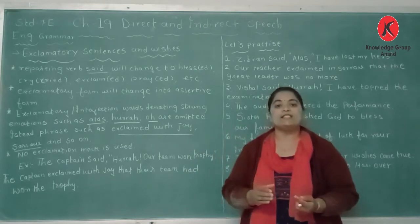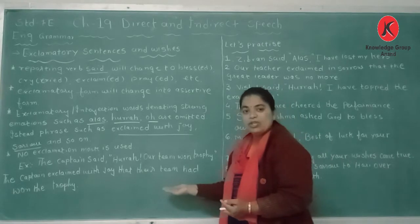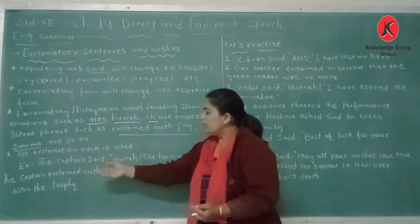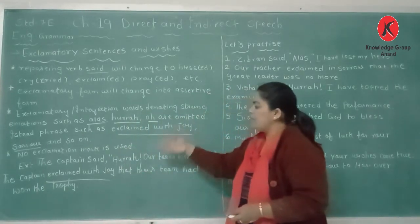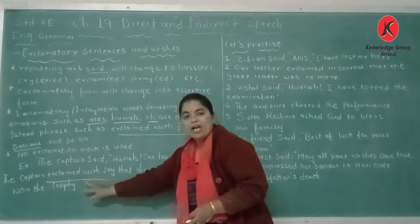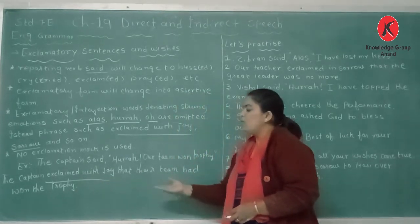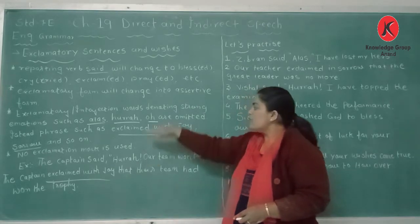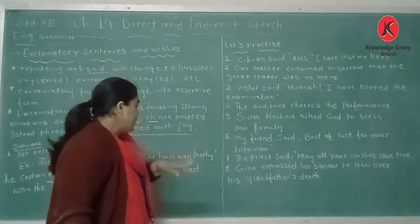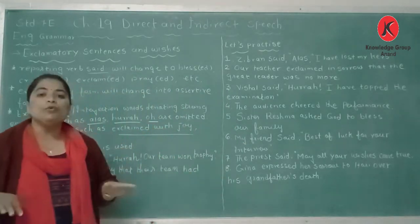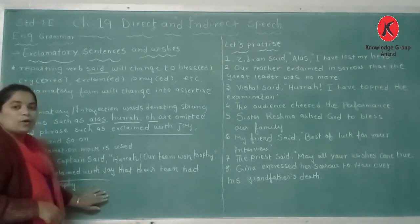The first sentence is a direct speech in exclamatory form. Let us change it into indirect speech: 'The captain exclaimed with joy that the team had won the trophy.' Here, instead of 'hurrah,' we have used the phrase 'exclaimed with joy.' These exclamatory and interjection words expressing strong emotions are omitted when we change from direct to indirect speech, and we use phrases like 'exclaimed with sorrow,' 'exclaimed with joy,' and so on.